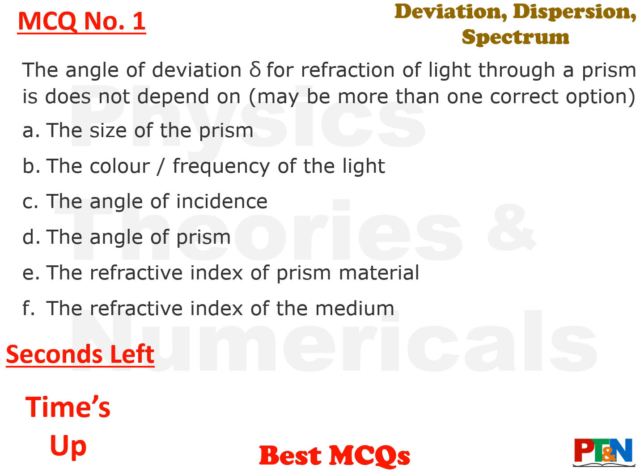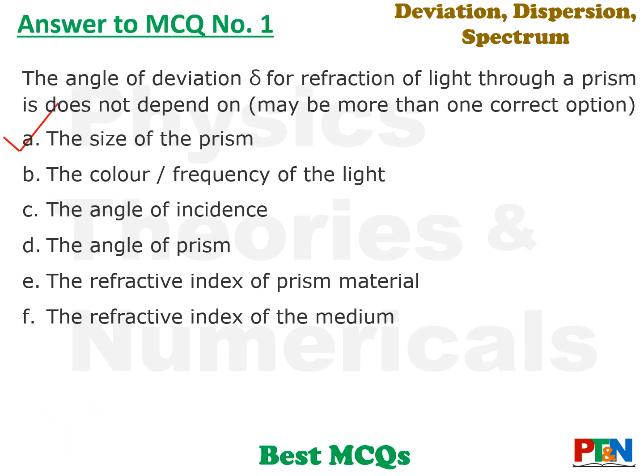Time is up. Let's see the answer. The answer is option A — the size of the prism does not have any effect on delta, that is the angle of deviation. The other five options do have an effect on delta.